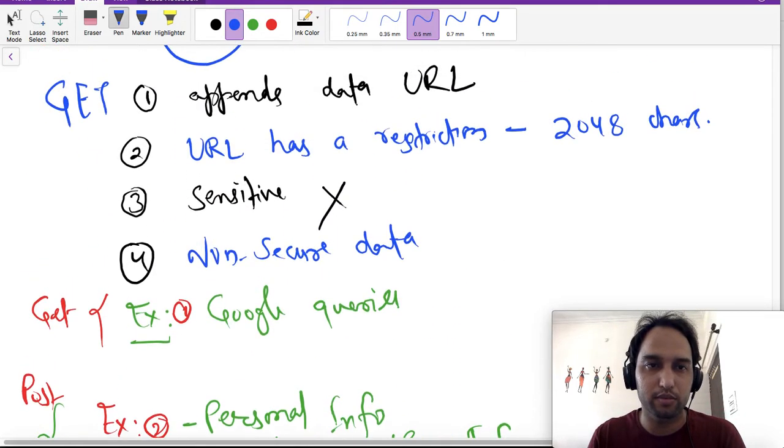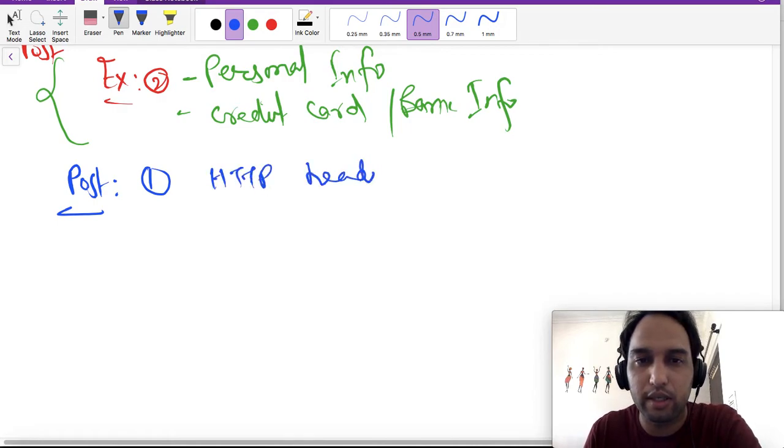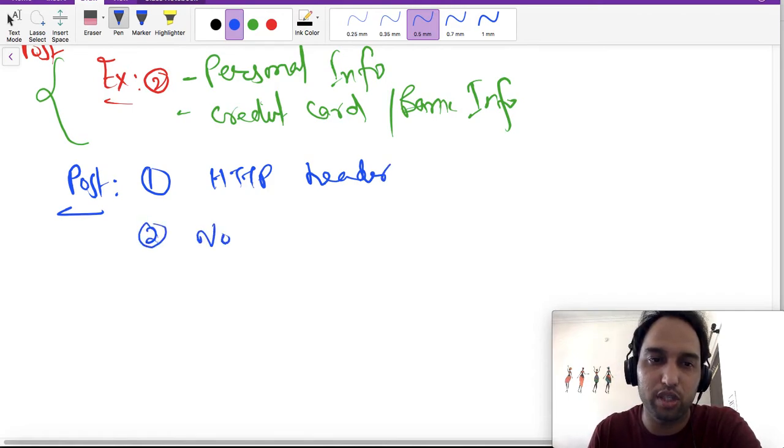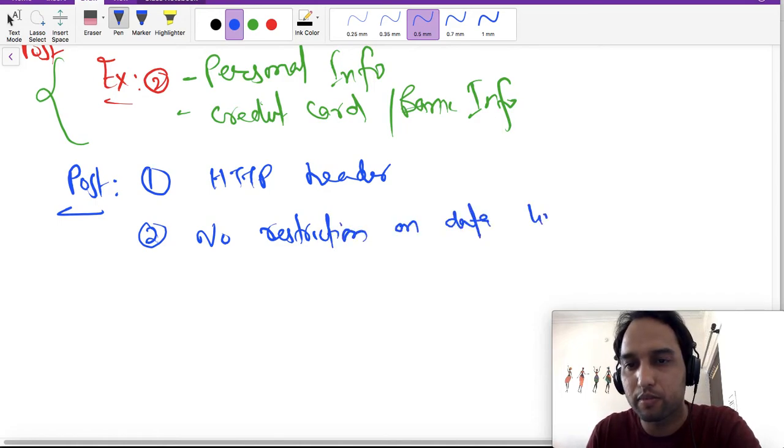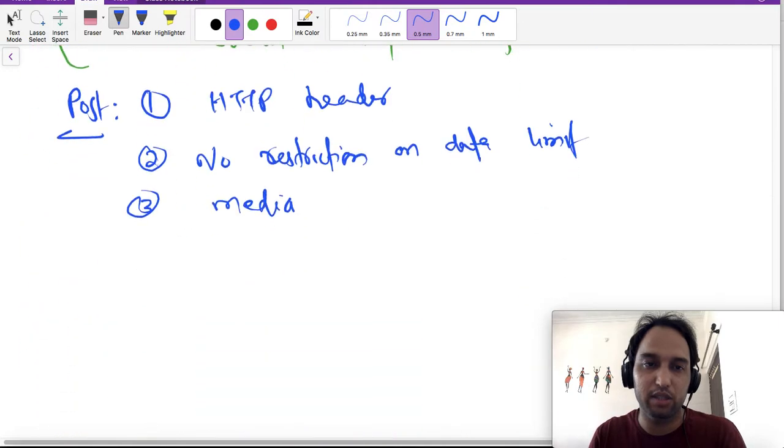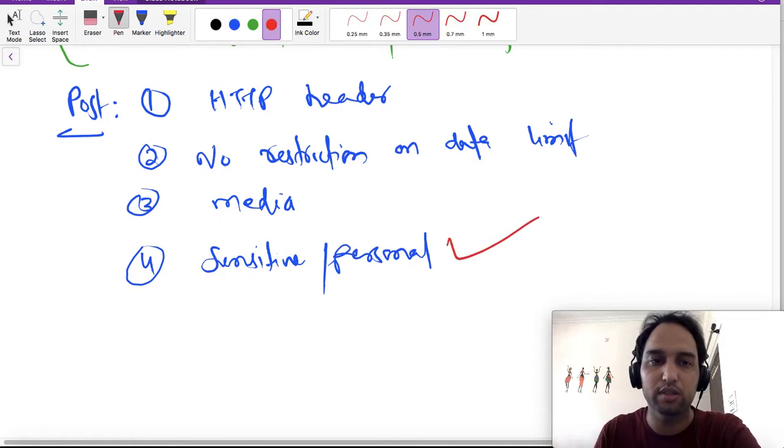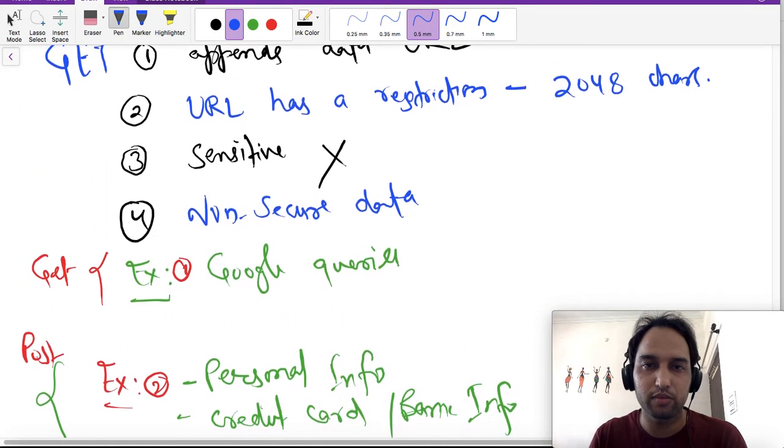Secondly, let's talk about POST. We have said that in GET, data is appended to URL, but how does POST send the data? It wraps it around the HTTP header and sends the data. Secondly, there is no restriction on length or no restriction on data limit. You can also send media using POST method, but you can't send media using GET method. If you have any sensitive information or personal information, you can send media using POST method.